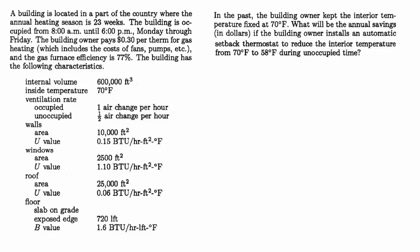The building has the following characteristics. Internal volume is 600,000 cubic feet. Inside temperature is 70 degrees. Ventilation rate is one air change per hour when occupied and half an air change per hour when unoccupied. For the walls, windows, and roof, we know the total area of each surface and the overall heat transfer coefficient U value. For the floor, it's a slab on grade, and we have the length of the perimeter or exposed edge and the B value, which is like the heat transfer coefficient but with different units.